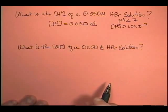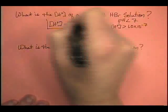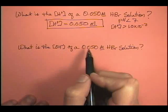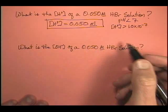So let's look at the second part. That was quick and easy. The second part. What is the hydroxide ion concentration of this same solution, 0.050 molar HBr?